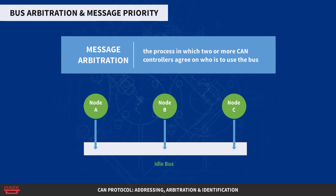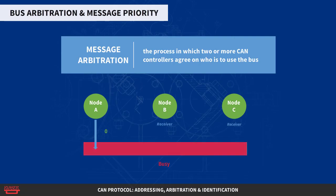The transmitting nodes monitor the bus while they are sending. If a node detects a dominant level when it is sending a recessive level itself, it will immediately quit the arbitration process and become a receiver instead. The arbitration is performed over the whole arbitration field, and when that field has been sent, exactly one transmitter is left on the bus. This node continues the transmission as if nothing had happened.